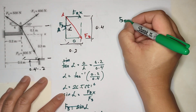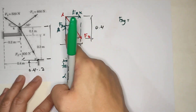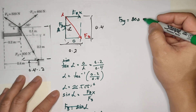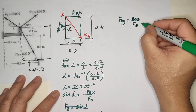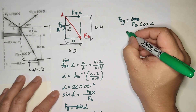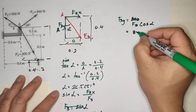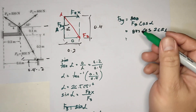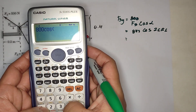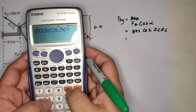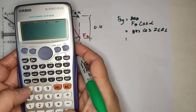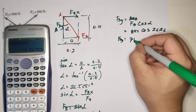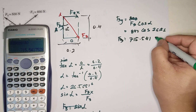Next, to solve for F3y — since Y is the adjacent side, you use cosine. F3y equals F3 times cosine alpha, which is 800 times cosine 26.56 degrees. Using the stored value to keep the same decimal precision, F3y equals 715.5418 Newton.